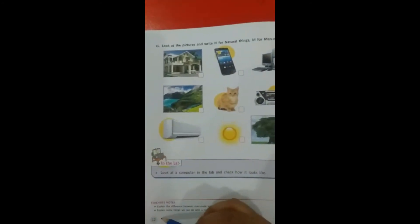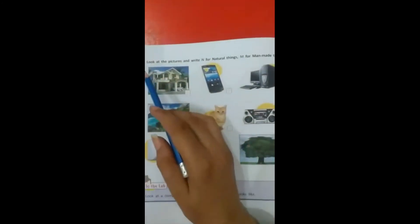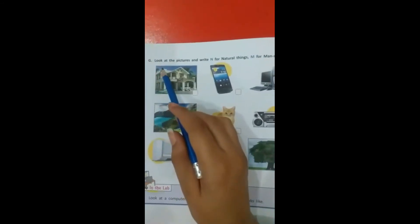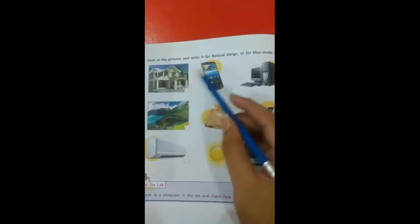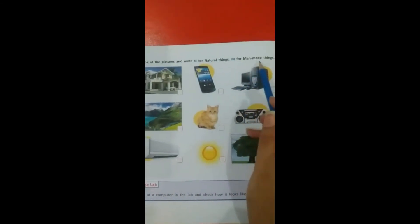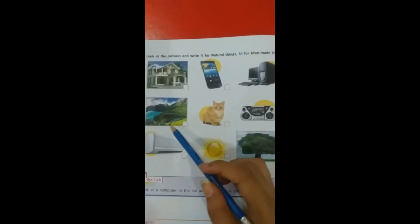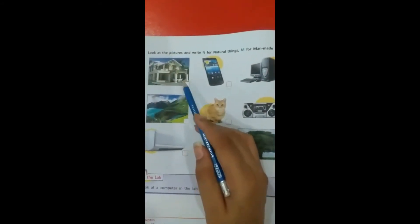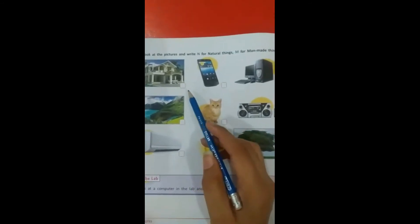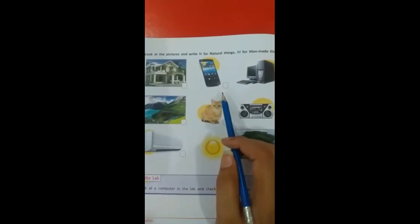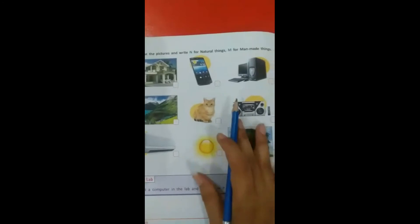Now come to page number 12. Look at exercise G. Look at the picture and write N for natural things, M for man-made things. If you have pictures given here which are made by Allah, then we can write N. If made by man, then we can write M. A small box is given here.